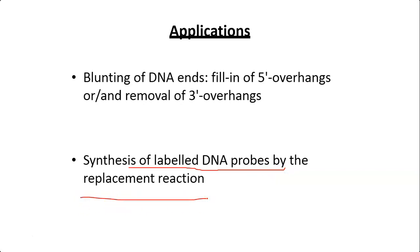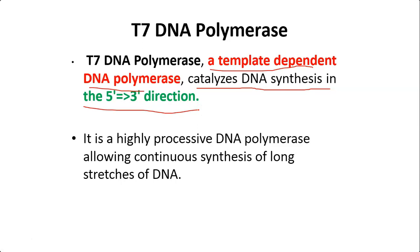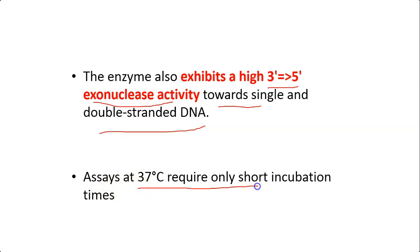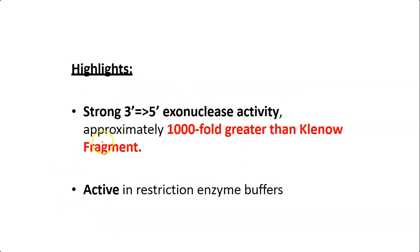T7 DNA Polymerase is also a template-dependent DNA polymerase that catalyzes DNA synthesis in the 5' to 3' direction. It is a highly processive polymerase, allowing continuous synthesis of long stretches of DNA. It exhibits high 3' to 5' exonuclease activity towards both single- and double-stranded DNA, with approximately 1000-fold greater 3' to 5' exonuclease activity than the Klenow fragment. Assays are performed at 37°C and require only a short incubation period.